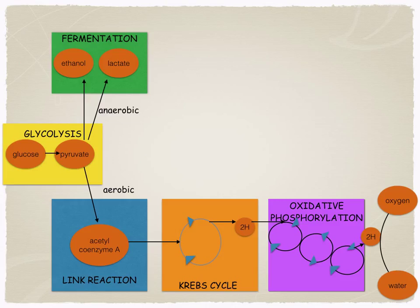The breakdown of glucose in aerobic respiration occurs in four stages: glycolysis, the link reaction, Krebs cycle, and oxidative phosphorylation. Anaerobic respiration, which we call fermentation, is also part of the picture.